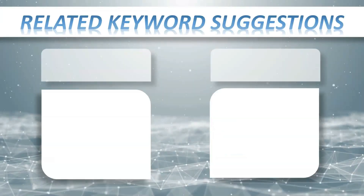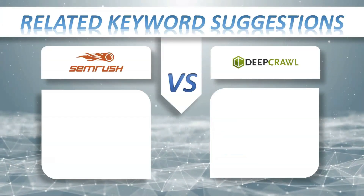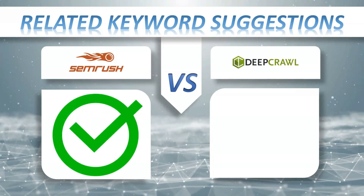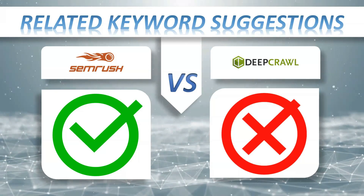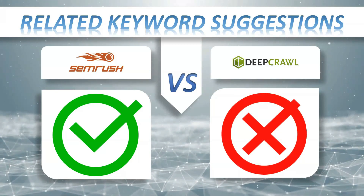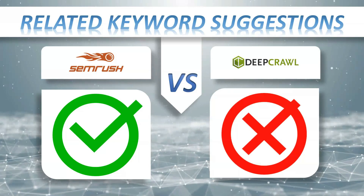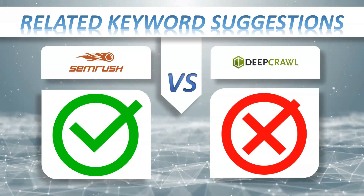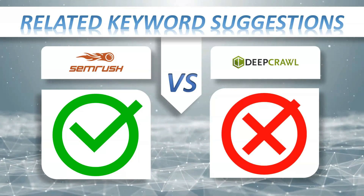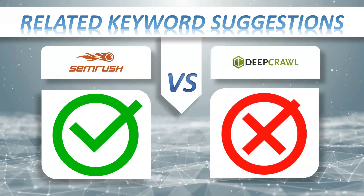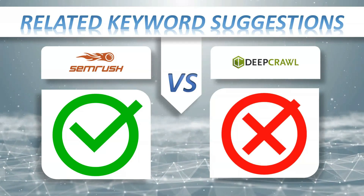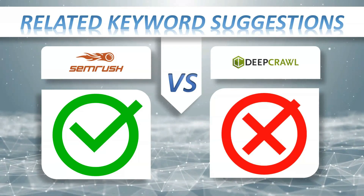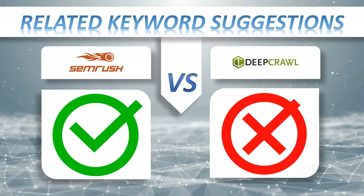Related keyword suggestions: SEMrush plus, DeepCrawl minus. The easiest way to attract clients is to find out what your potential customers or readers are searching for on Google and create content around those topics. Imagine how your business would benefit if you could analyze search trends on Google, find search terms related to your business domain, and customize content on your website to serve the actual needs of your customers.